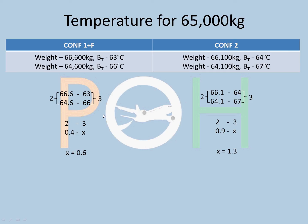Apply the corrections. Since temperature is decreasing with increasing weight, for Config 1+F: 66°C minus 0.6 = 65.4°C. For Config 2: 67°C minus 1.3 = 65.7°C. Both round down to 65°C. Flex is always rounded to the lower value — you cannot round up to 66 because that thrust would not be developed. A lower flex temperature gives higher thrust, which provides the safety margin.